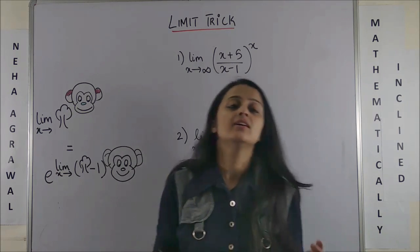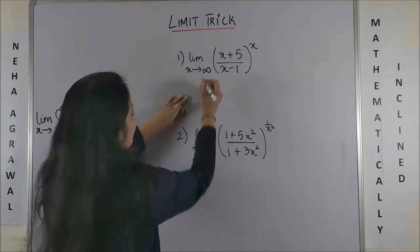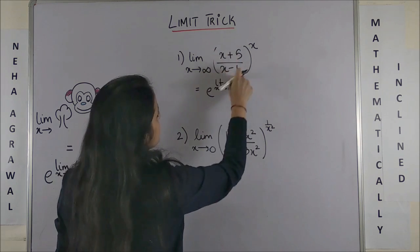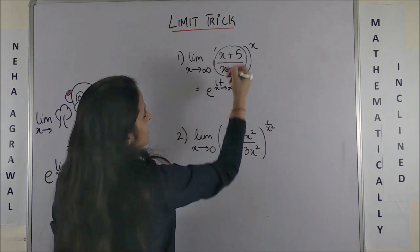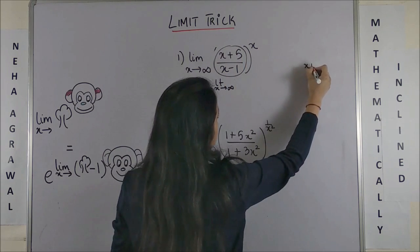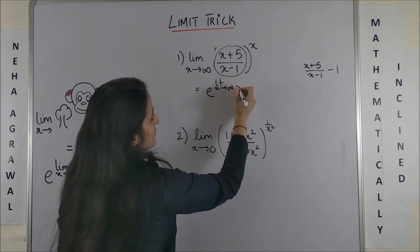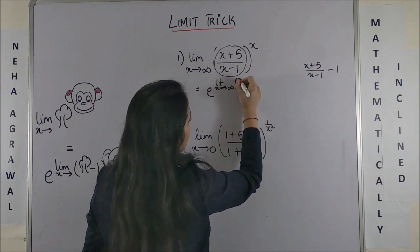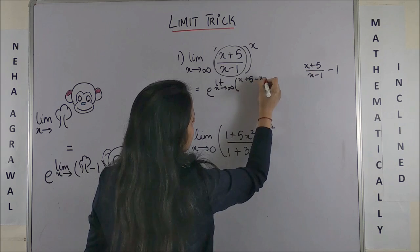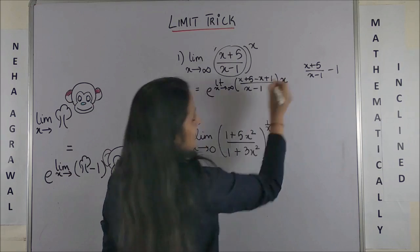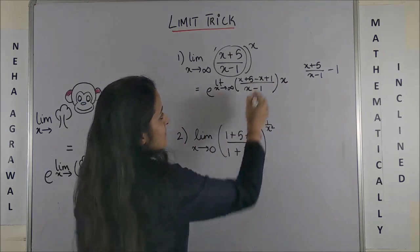Following the technique, this would be e raised to power limit extending to infinity, this tree minus one. So it is actually (x+5)/(x-1) minus 1, which is going to give us (x+5-x+1)/(x-1).